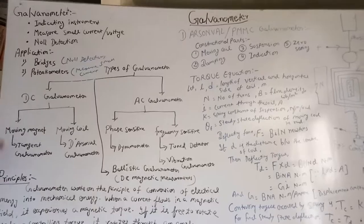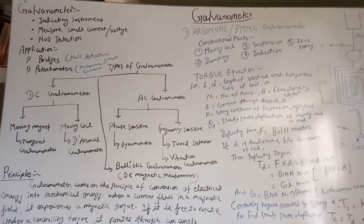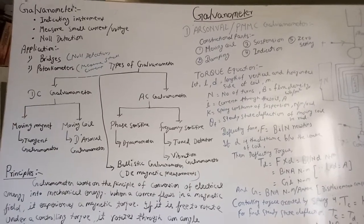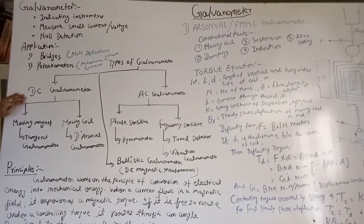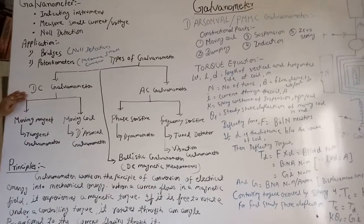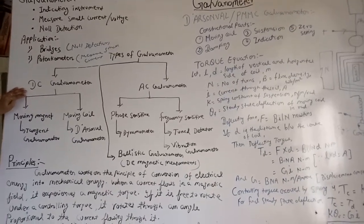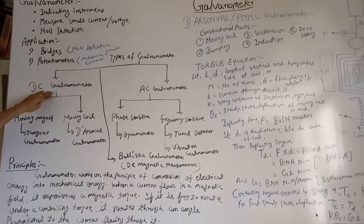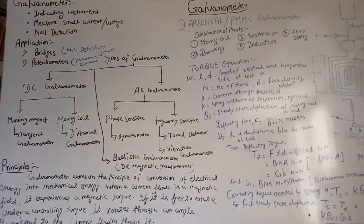Now come to the DC galvanometer. As the name specifies, if the supply is DC current or DC voltage, then it is known as DC galvanometer.